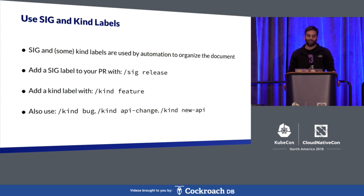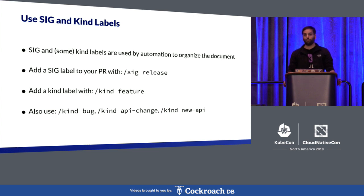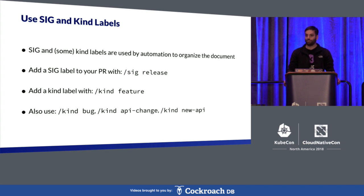The other thing I would implore you to do is use more SIG and kind labels if you can. If you add slash SIG cluster-lifecycle, that'll categorize your note in the cluster-lifecycle section of the document. If you add multiple SIGs, that's a little less helpful for the release note document, but still more helpful than no SIGs. There are several kind labels you can use that'll add your note to various sections of the document, which is super useful.